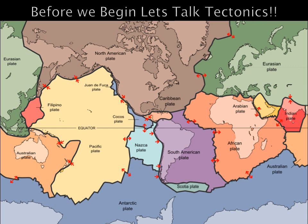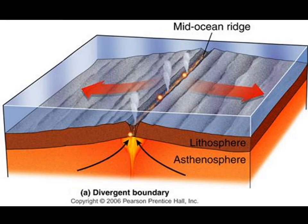The plates may converge forming a convergent margin, diverge forming a divergent margin, or slide past one another forming a transformed plate boundary. First we will look at divergent margins. This happens when tectonic plates move away or diverge from one another. When plates move away from one another, the mantle is exposed, and magma will spill out onto the surface of the earth as lava, which cools and makes new crust.